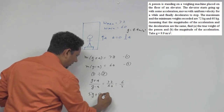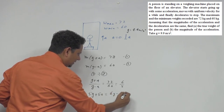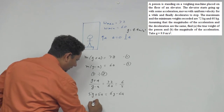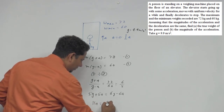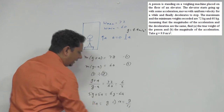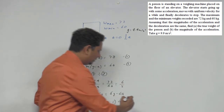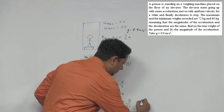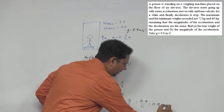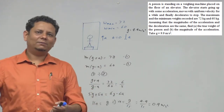So we get 5g + 5a = 6g − 6a. Bringing g terms and a terms together: 11a = g, which implies a = g/11. Substituting g = 9.9, we get a = 9.9 / 11 = 0.9 m/s². So the magnitude of acceleration is 0.9 m/s².